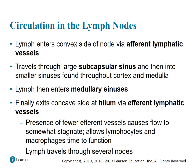Circulation in the lymph nodes: lymph enters the convex side of the node via afferent lymphatic vessels. It travels through the large subcapsular sinus and then into smaller sinuses found throughout the cortex and medulla. The lymph then enters the medullary sinuses. Finally, it exits the concave side at the hilum via efferent lymphatic vessels. The presence of fewer efferent vessels causes the flow to somewhat stagnate, which allows the lymphocytes and macrophages time to function. Lymph travels through several nodes.